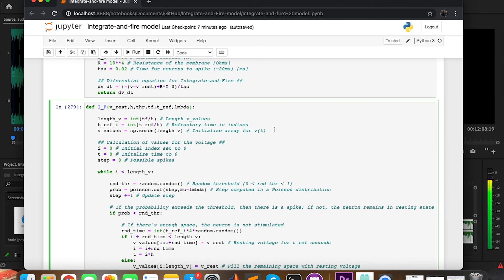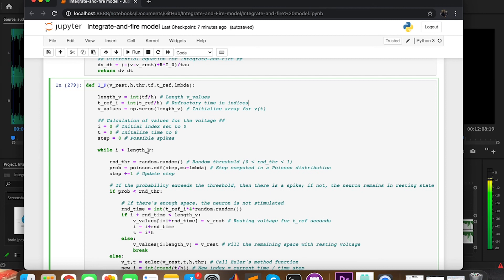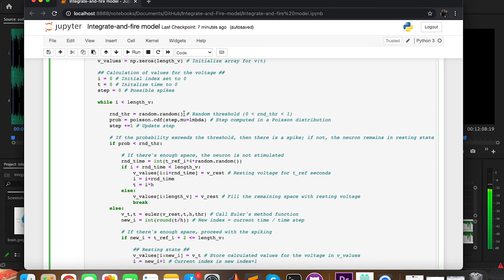The first thing we need to do is to convert the time in seconds into indices, because in an array we don't have time but a given number of elements. So the condition we want to set here is keep calculating values until we reach the end of the array. Here i is the variable that we use as a counter for the positions of v values, t for the time, and step to count the number of potential spikes.